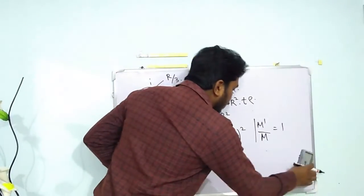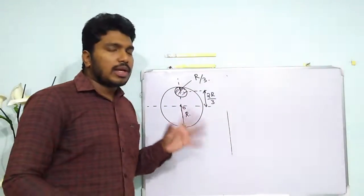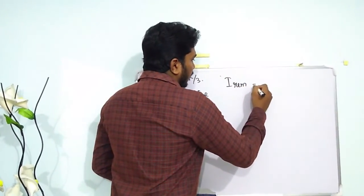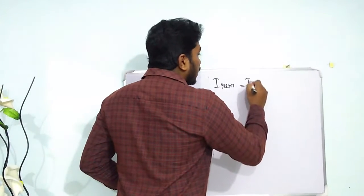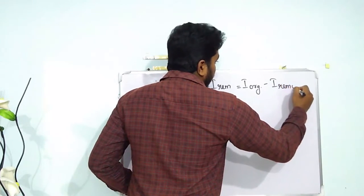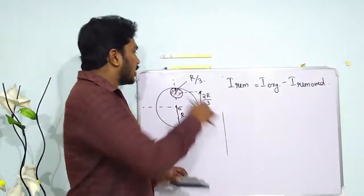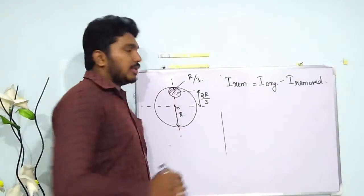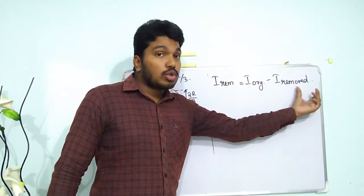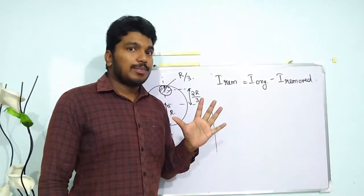Now let us proceed further and solve this question. To solve a question like this, there is a basic formula to remember: the moment of inertia of the remaining portion equals the moment of inertia of the original disk minus the moment of inertia of the removed disk, both about the axis through the point where we need to determine the moment of inertia — in this case through the center O. So I_remaining = I_original − I_removed.